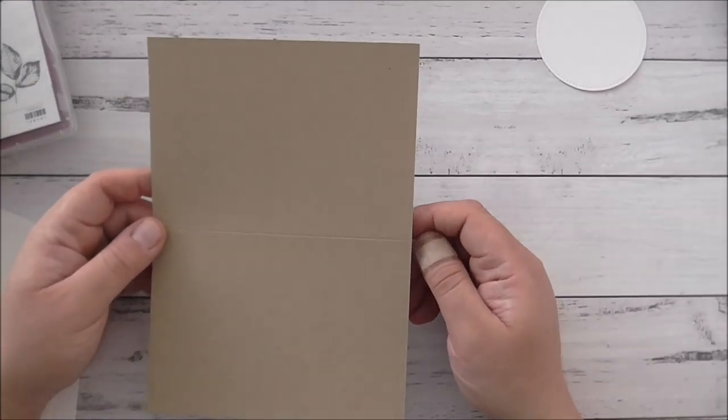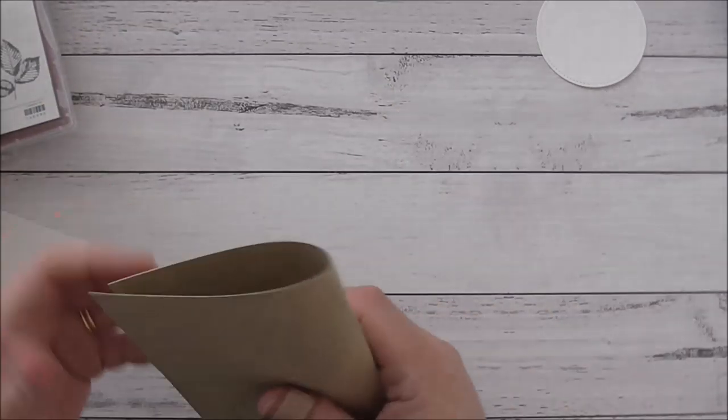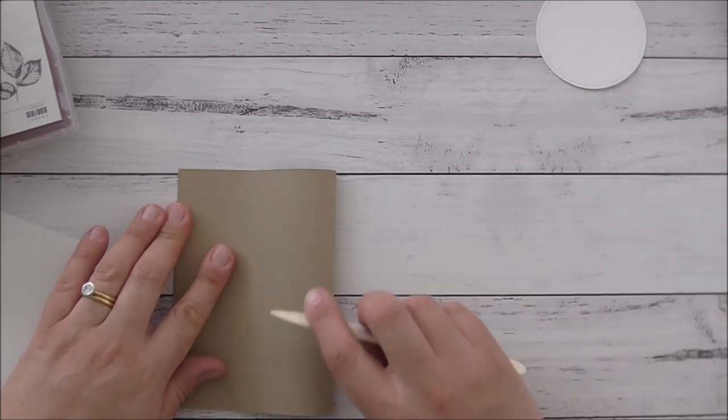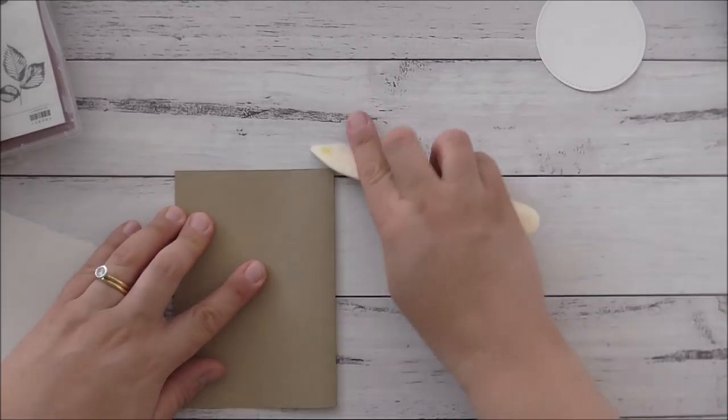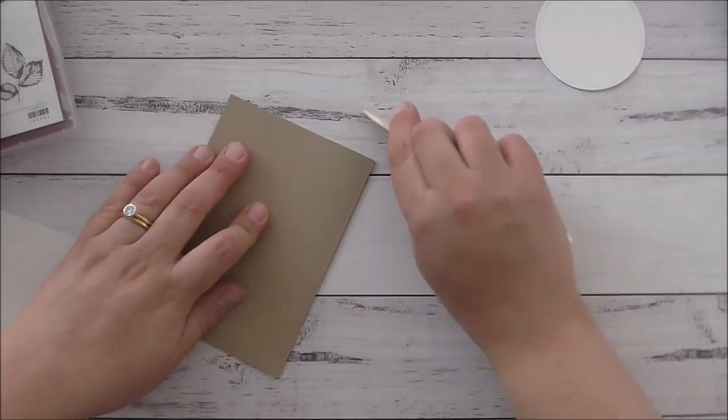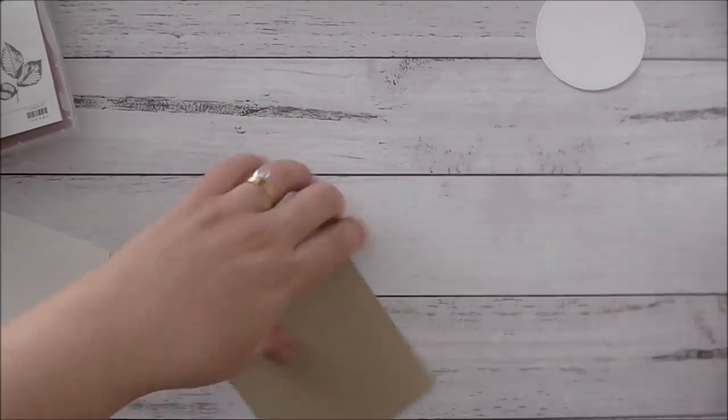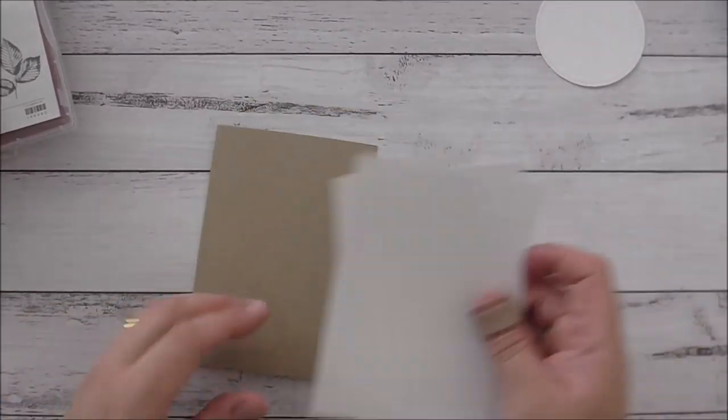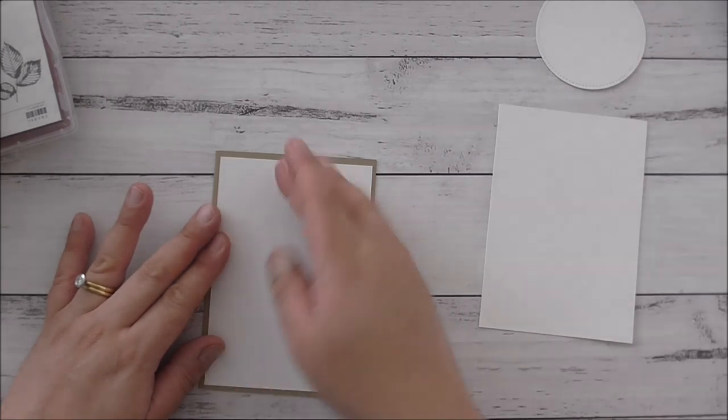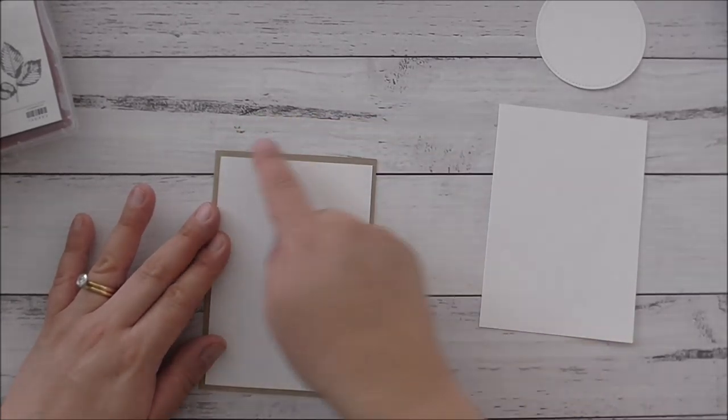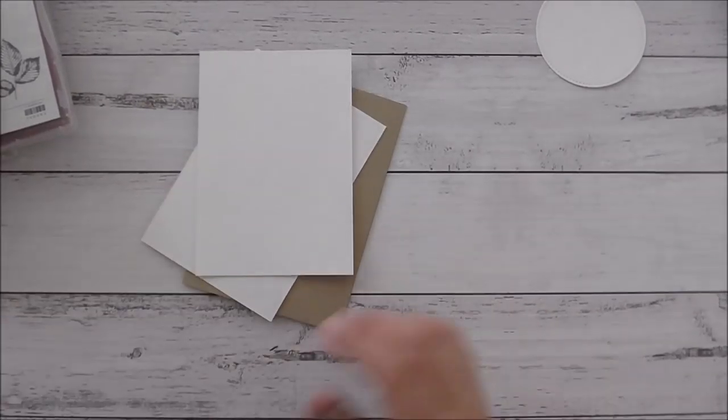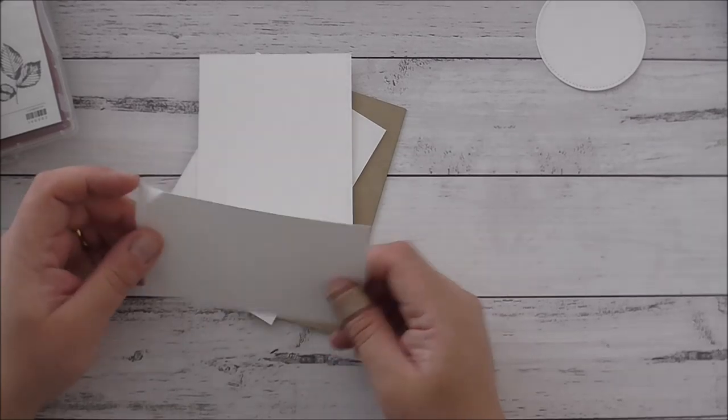For today I'm using Crumb Cake cardstock which is half an A4 and scored in half again. Of course you can use whichever card base you wish. I'm going to use my bone folder and burnish that score line. I always prepare in advance just to not waste time. I've got two pieces of Whisper White cardstock. One to layer on top. So I basically have an A6 card base and then I cut a quarter of an inch off there. And then I've got one for the inside as well. And then I've got some scrap piece of Whisper White cardstock. So we'll get started.